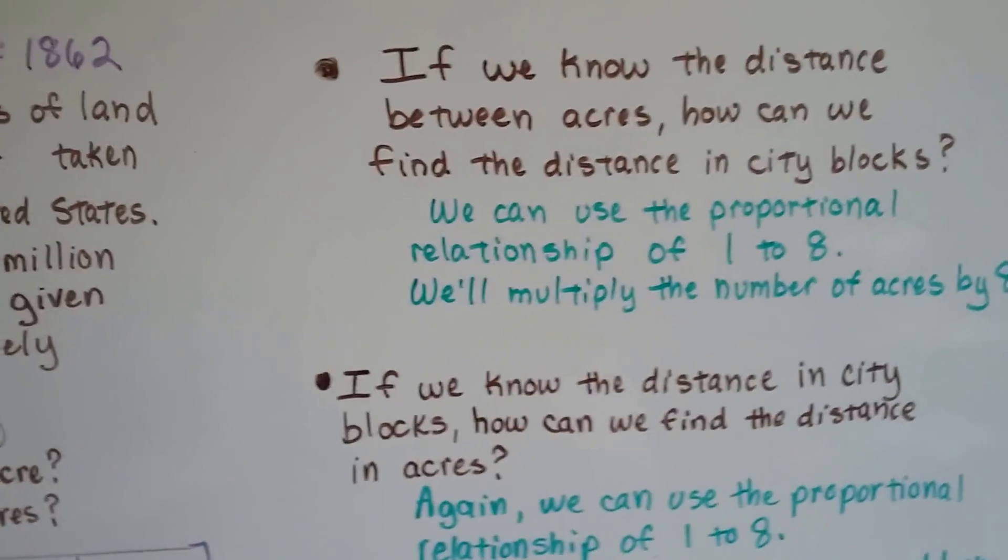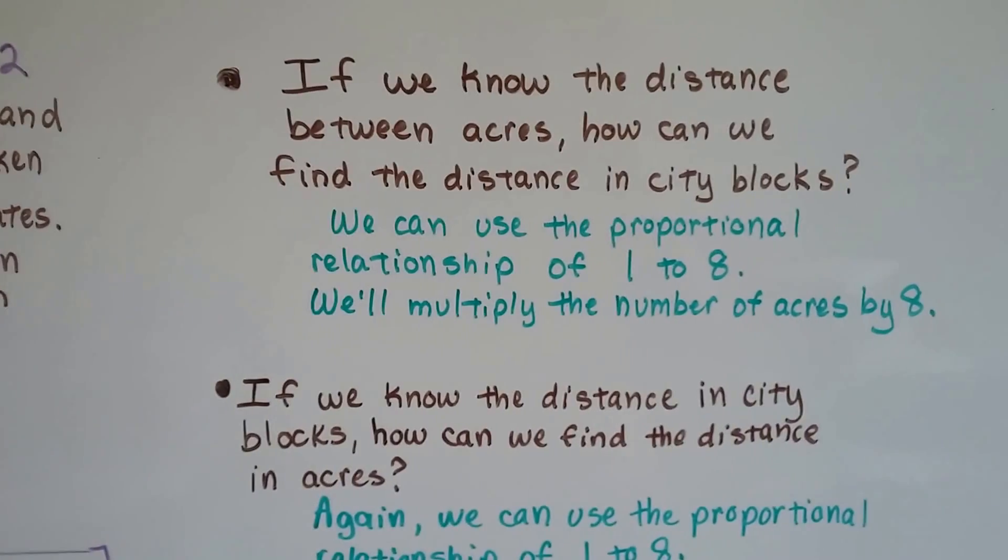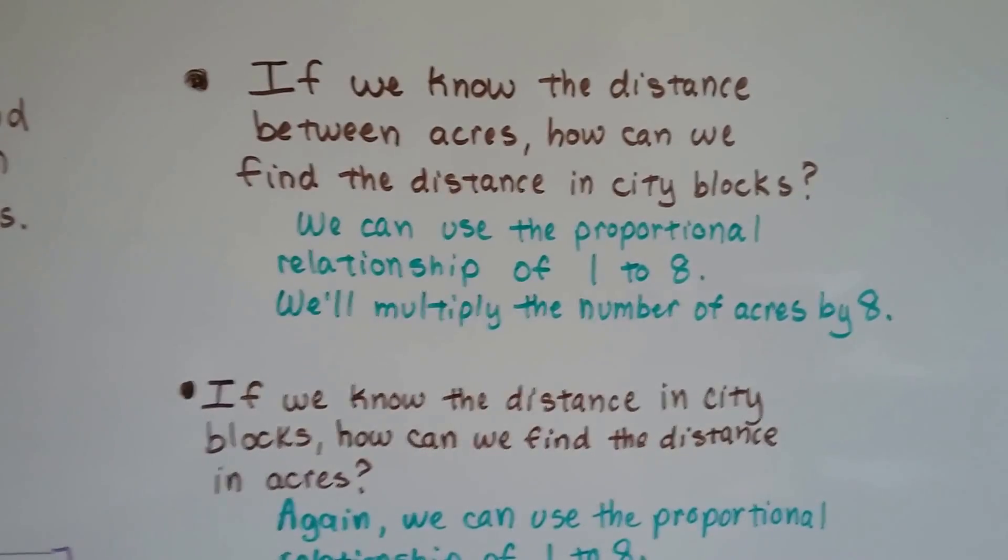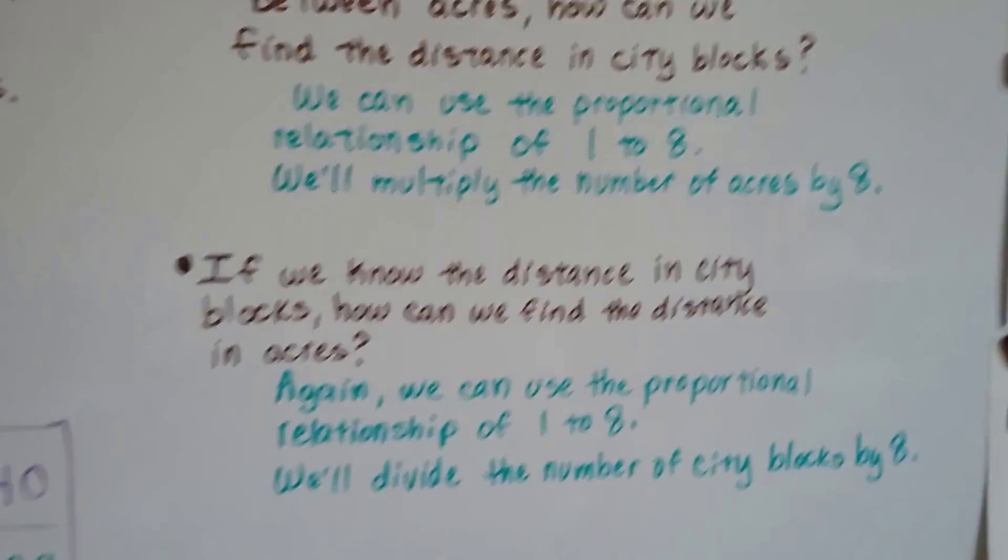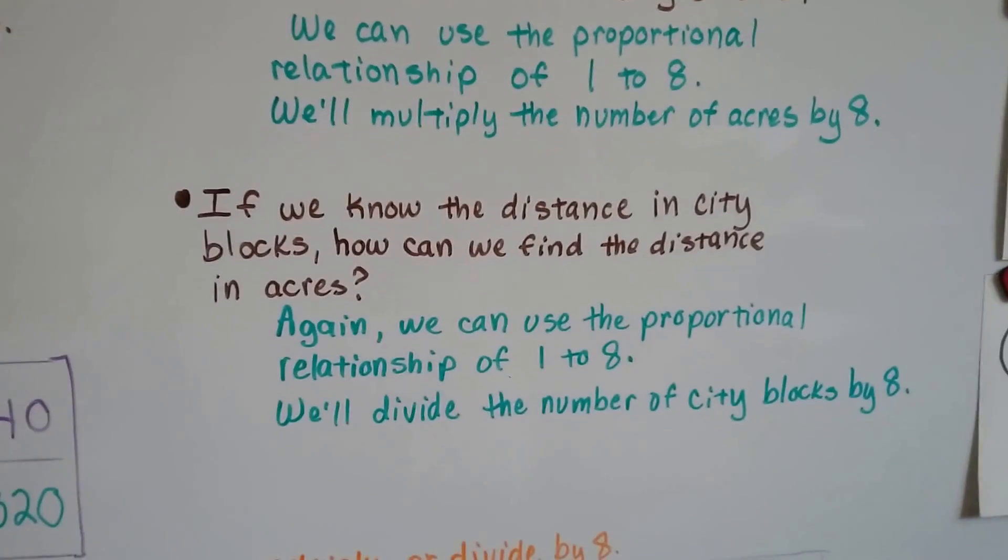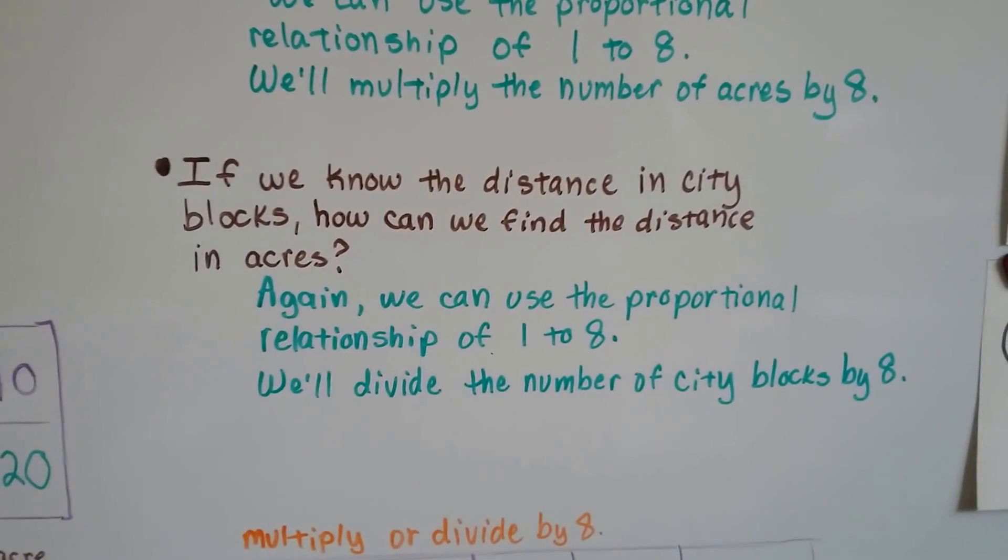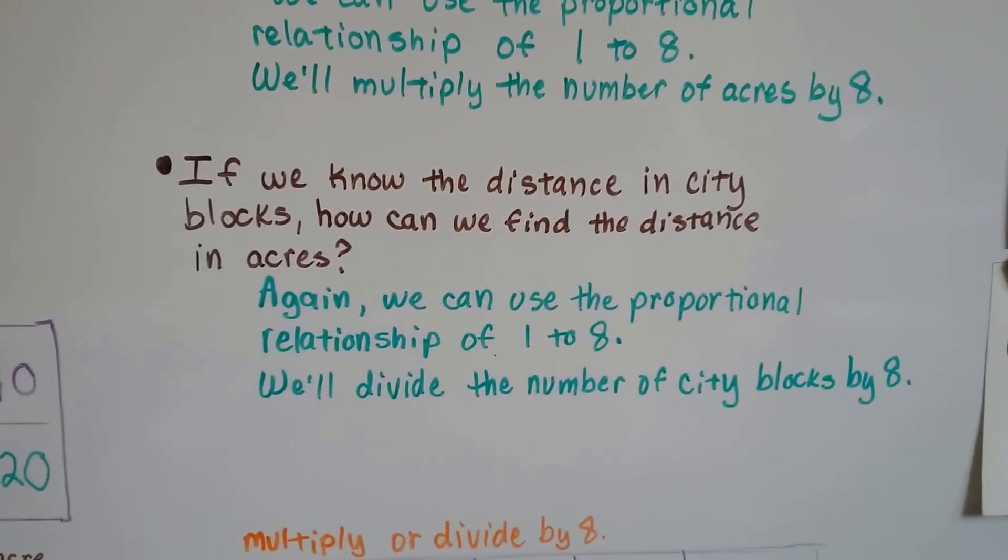If we know the distance between acres, how can we find the distance in city blocks? We use that proportional relationship of 1 to 8, and we'll multiply the number of acres by 8. If we know the distance in city blocks, how can we find the distance in acres? Again, we use that proportional relationship of 1 to 8, and we'll divide the number of city blocks by 8.